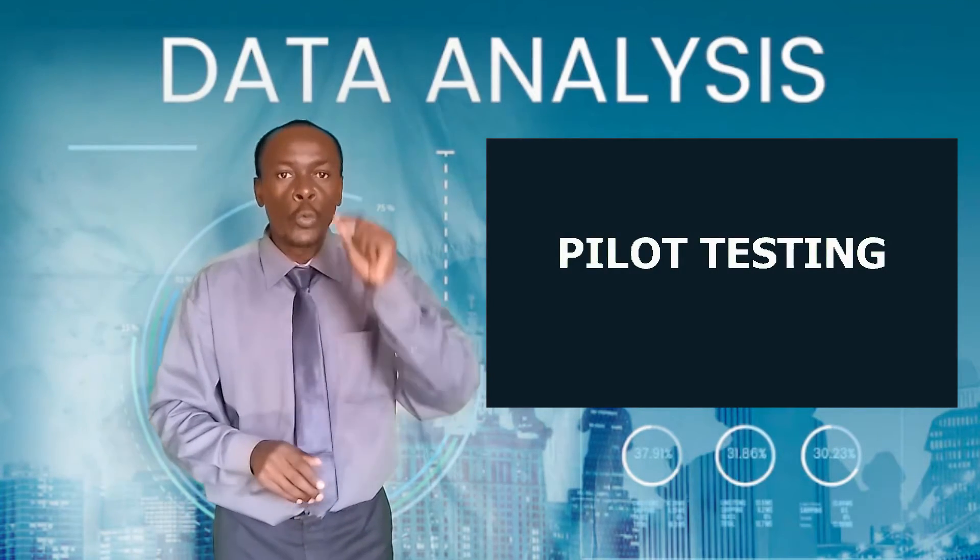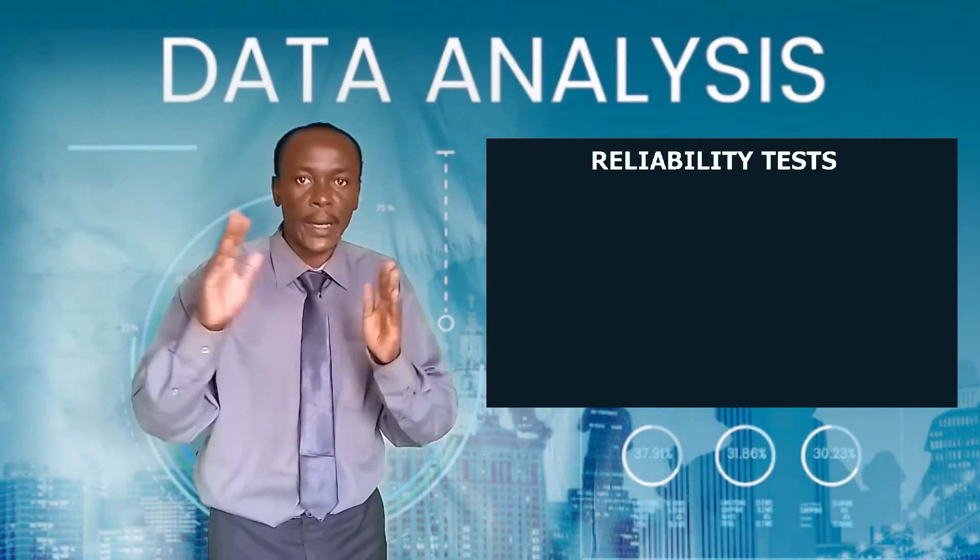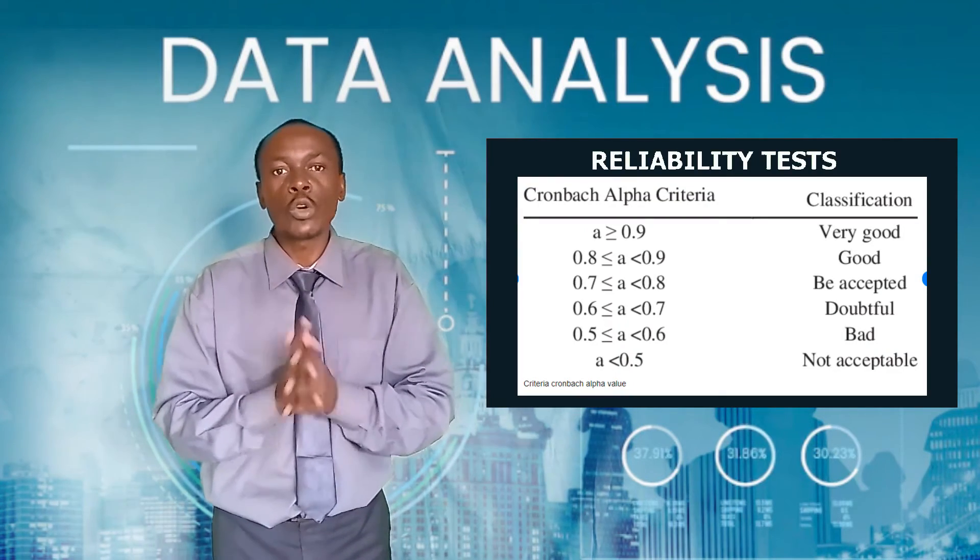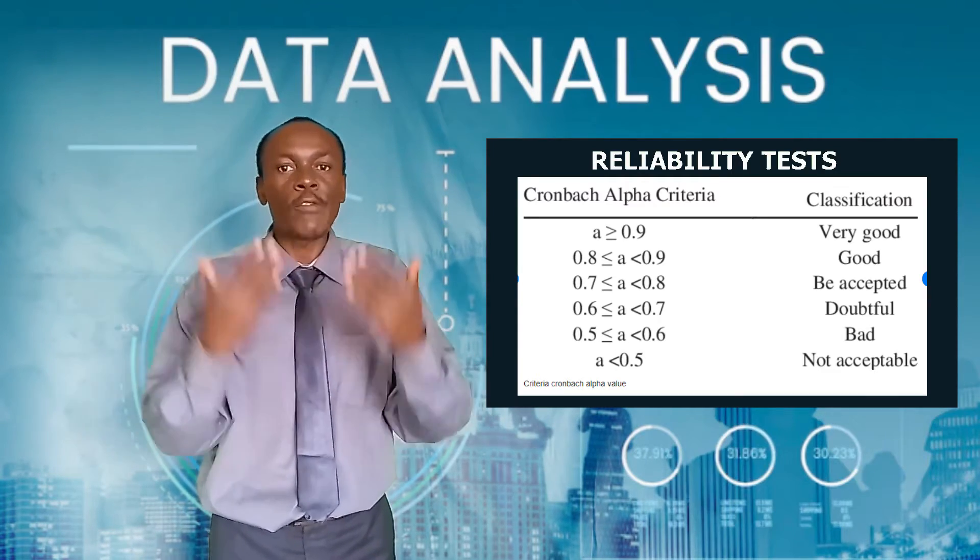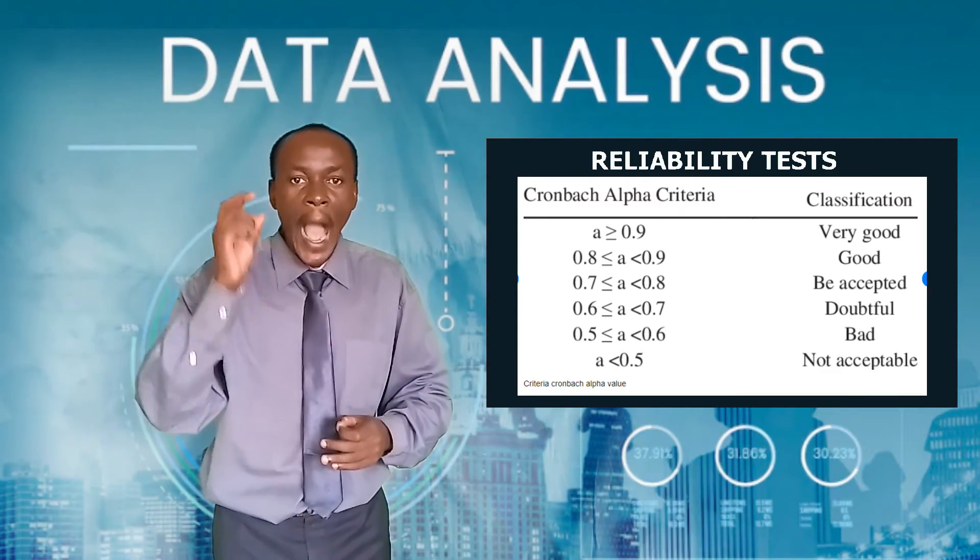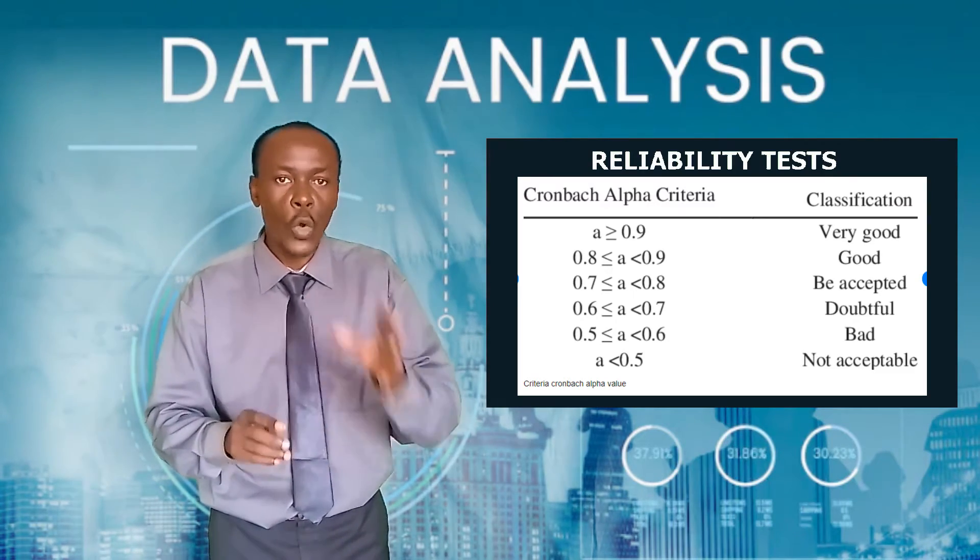Therefore, we shall test that particular instrument against reliability, where we shall use Cronbach's alpha, and we shall expect that those particular variables will have an alpha coefficient greater than 0.7 to qualify to the next level.